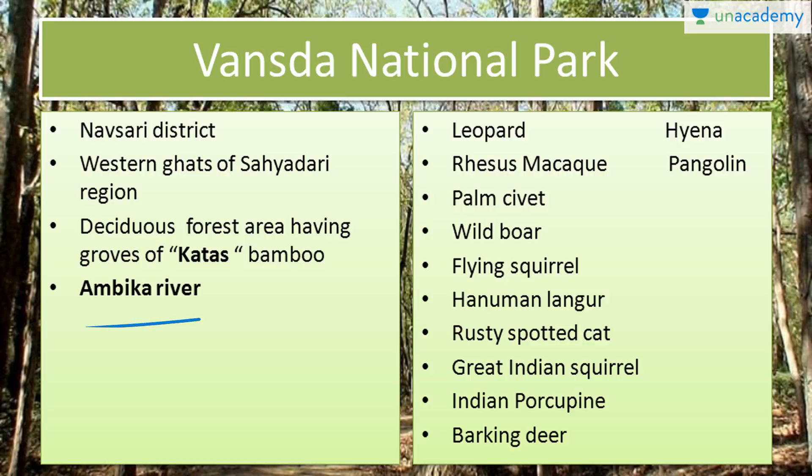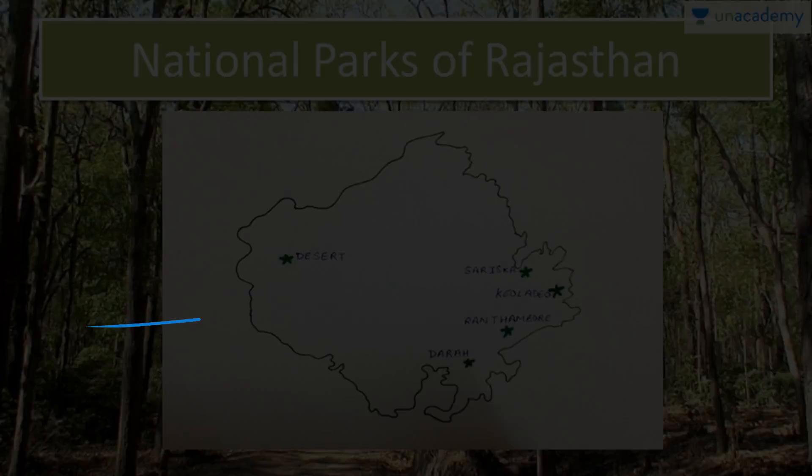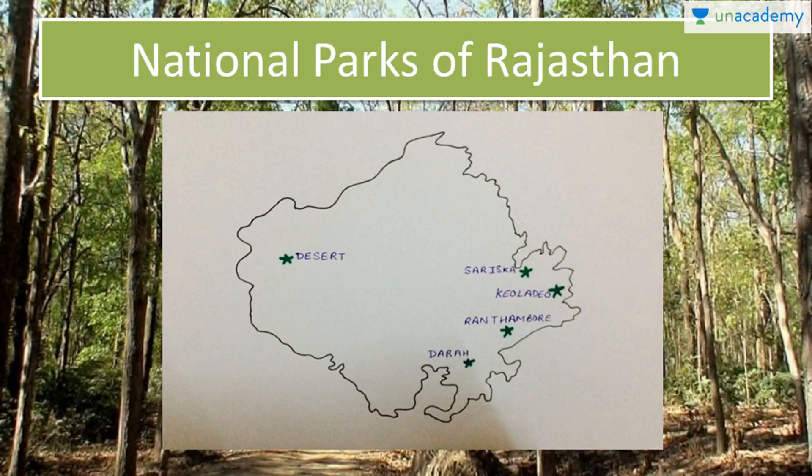Now we have the national parks of Rajasthan. We will discuss here five national parks: Desert, Sariska, Keoladeo, Ranthambore and Darrah.